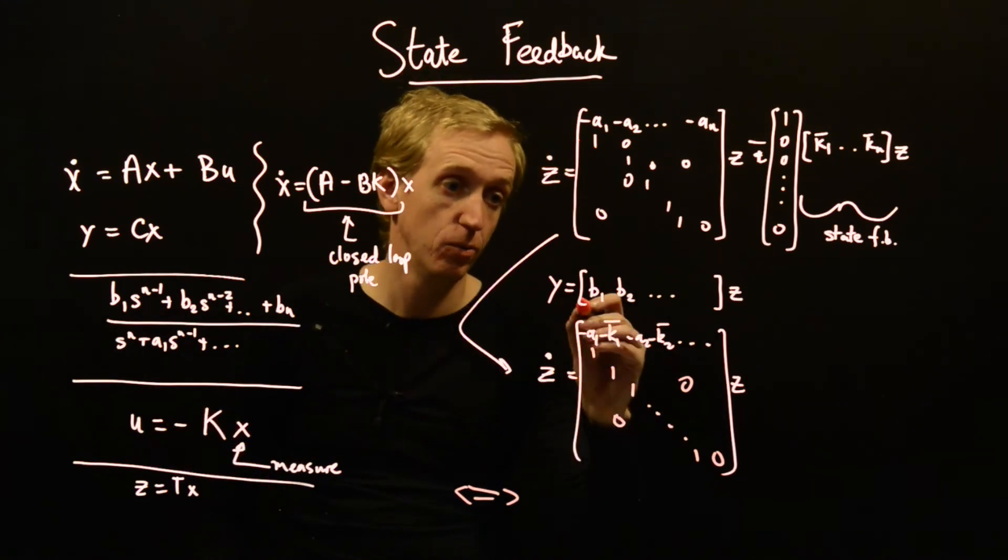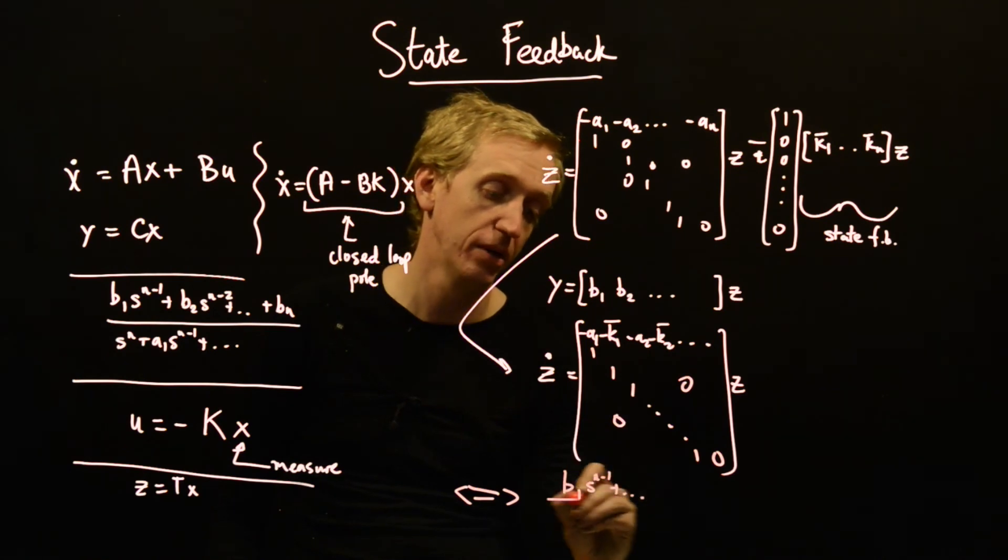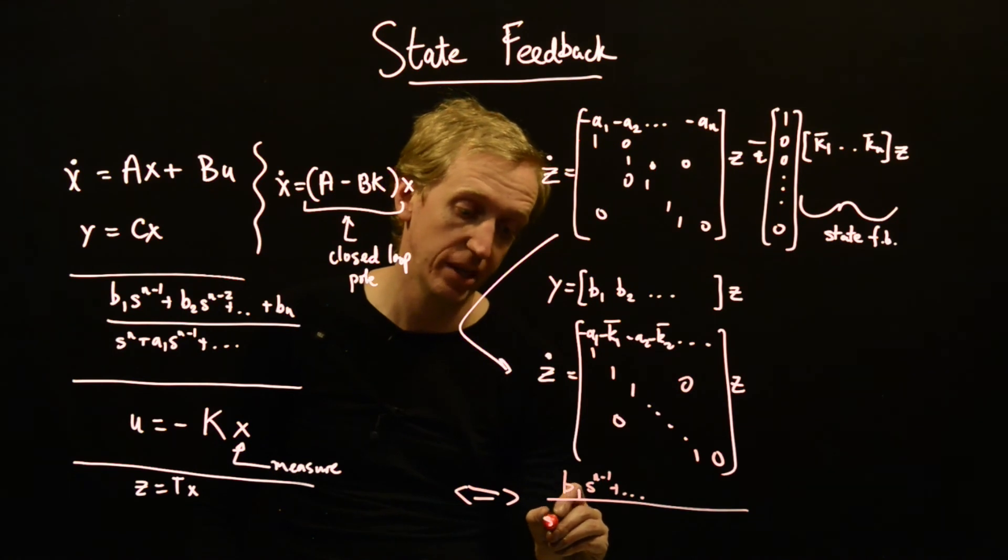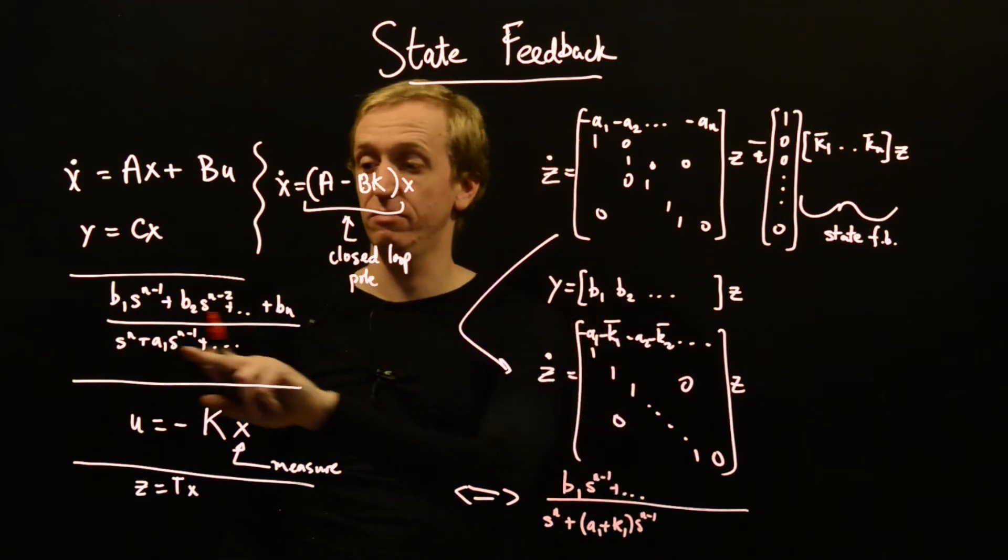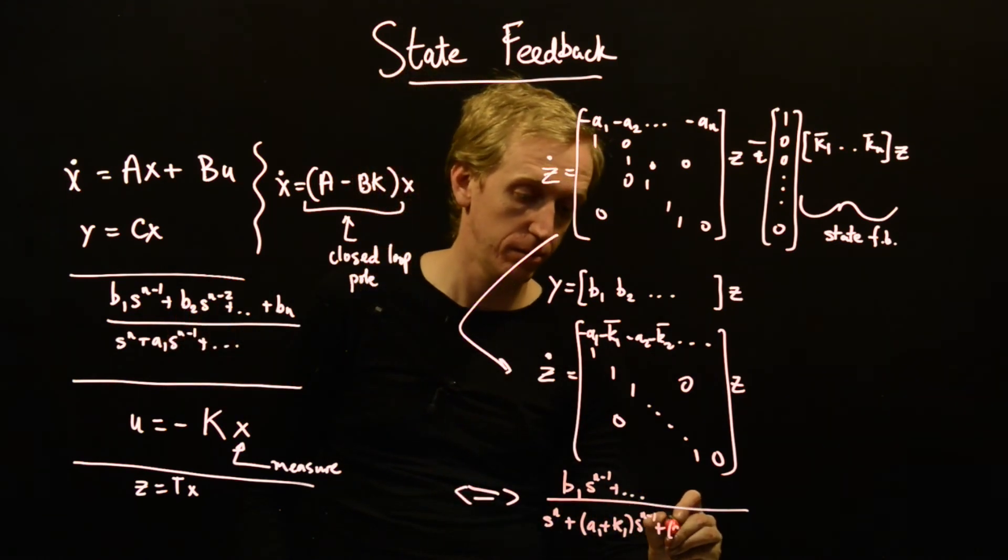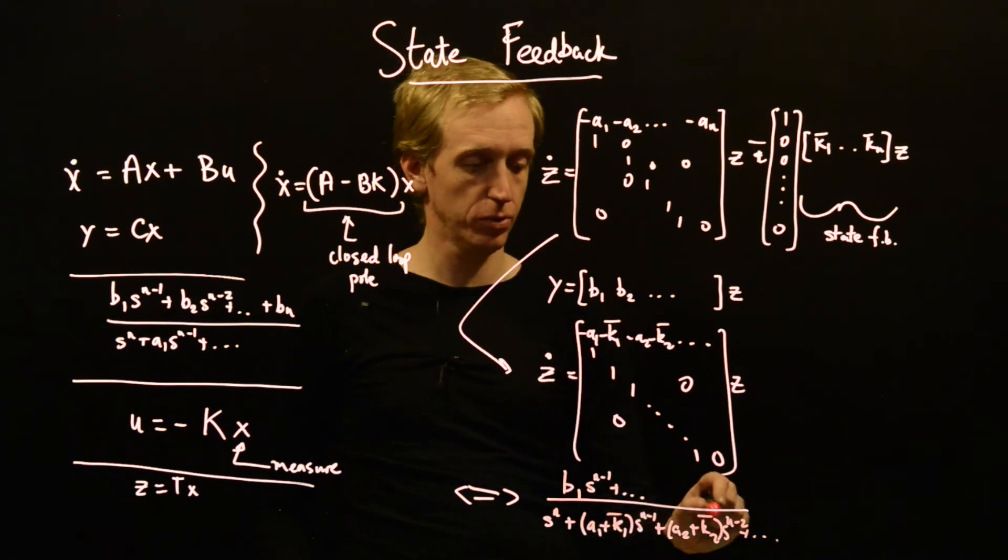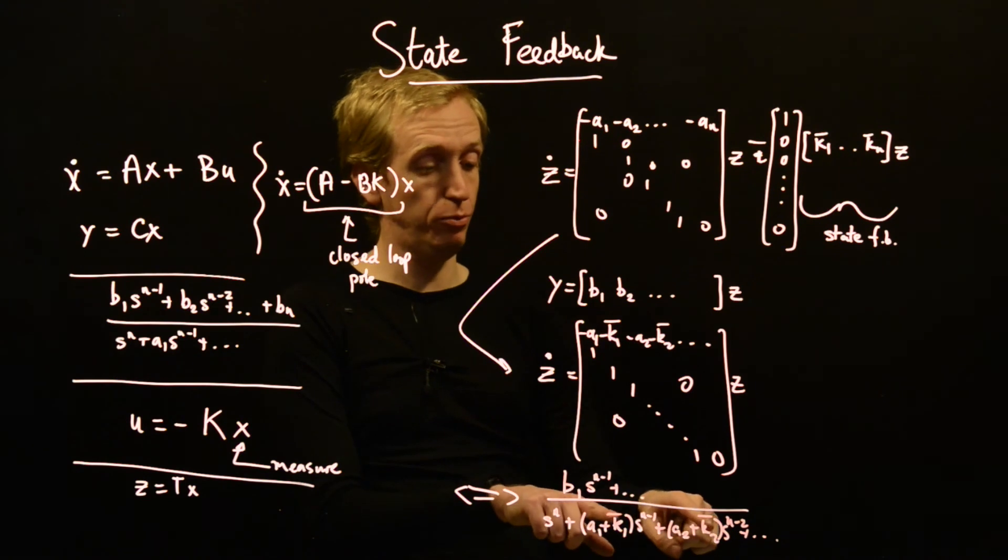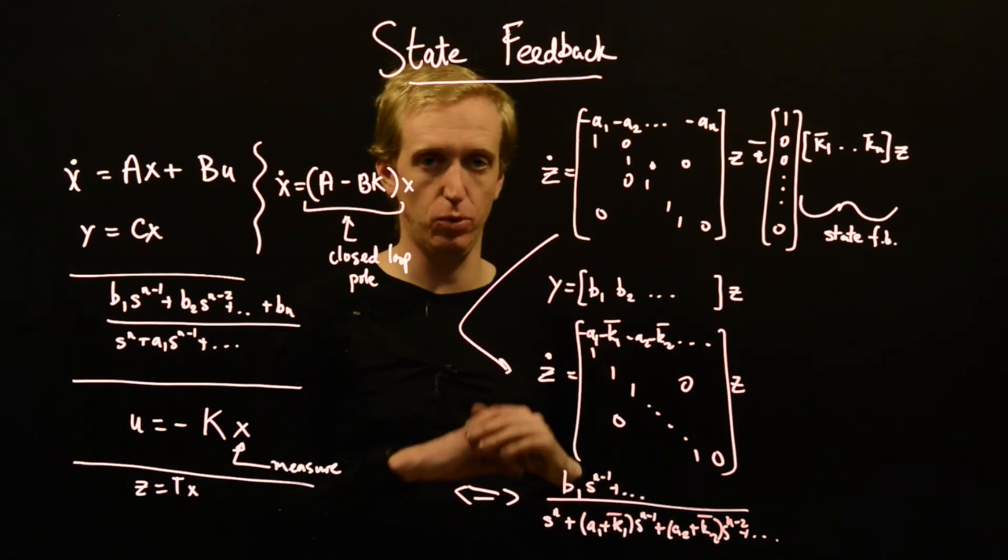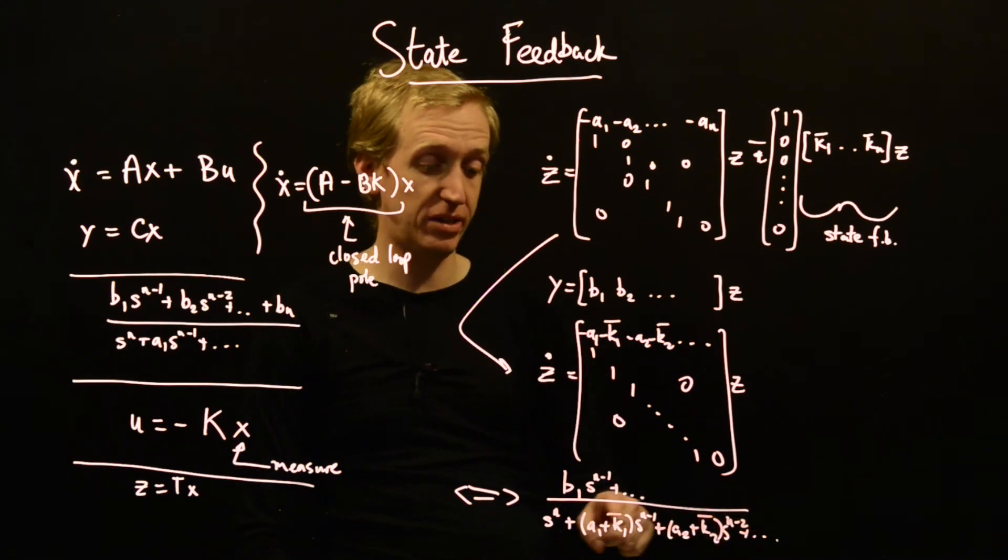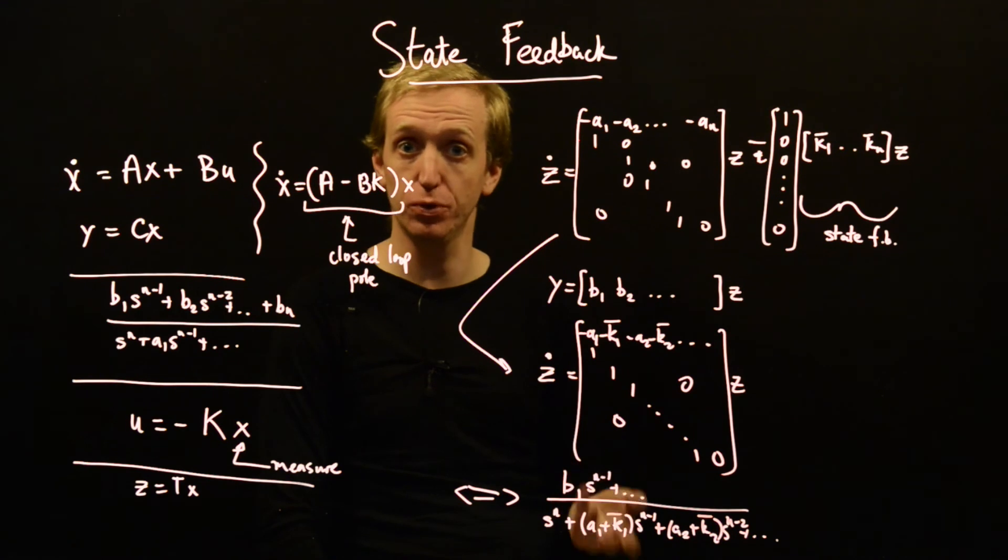In particular, what this means is that the closed loop system, the closed loop transfer function, we get the numerator from this one, that hasn't changed. So we've got b1 s to the n minus 1 plus so on. But in the denominator, critically, we've got s to the n plus a1 plus K1 s to the n minus 1. So this determines the corresponding entry here and so on, K2 s to the n minus 2 and so on. So what does this mean? And these should all be bars, of course. Well, this means that through an appropriate choice of my state feedback K bar, I'm able to make all of these coefficients equal whatever I want them to be equal to. So that means I'm able to make the denominator polynomial equal to whatever I want. And that's actually the same as saying I can place the poles wherever I want.